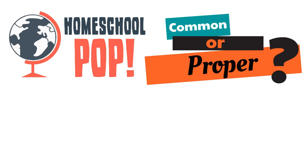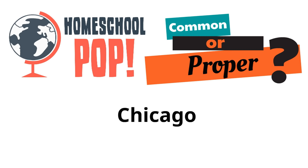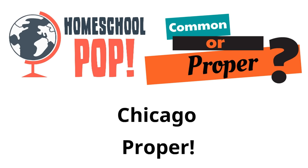How about this one? Chicago. Is this a common or a proper noun? It's proper. We have two clues. The first one is that it's a specific place — Chicago. And also, what's the other clue? It starts with a capital letter. We know that Chicago is a proper noun.